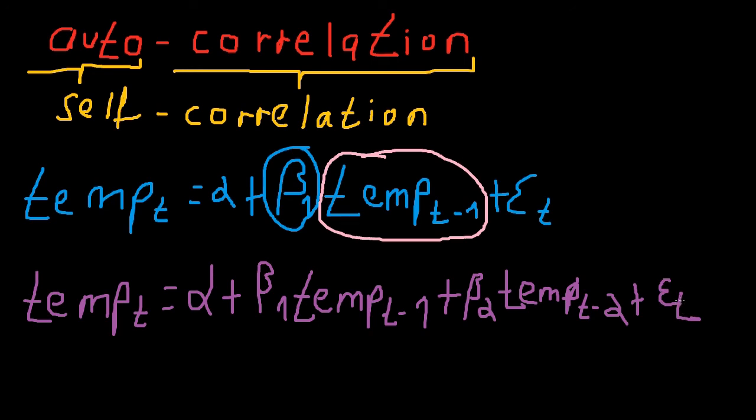So this is now what we call an autoregressive model of second order. This is what we call an AR(2) model.